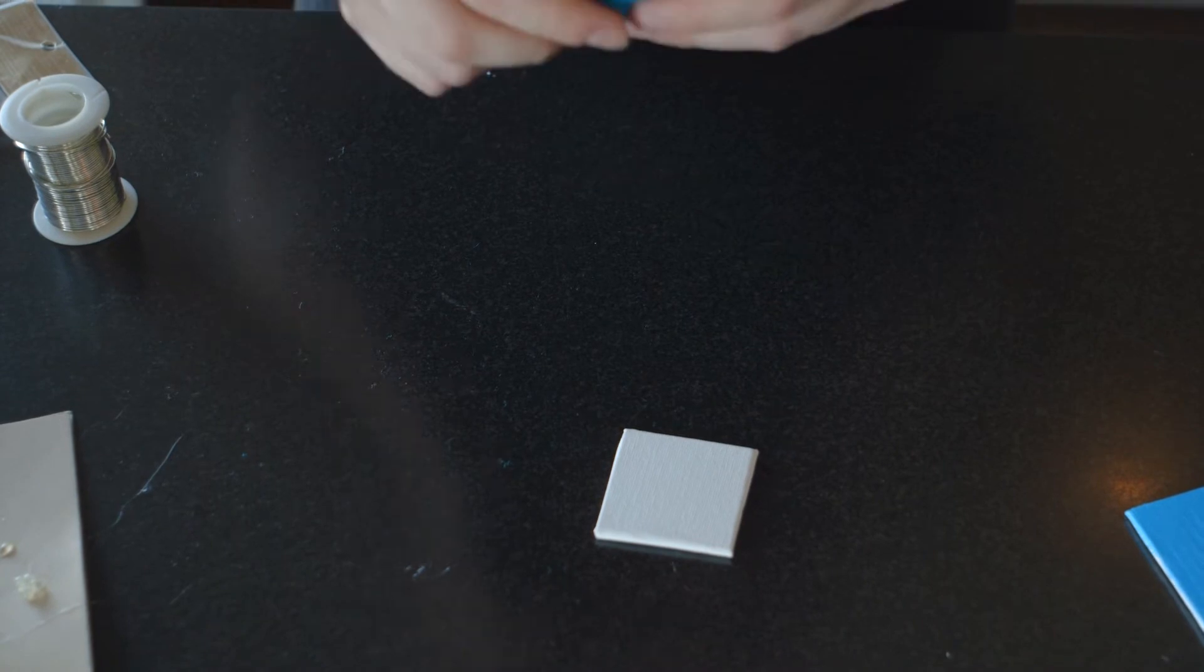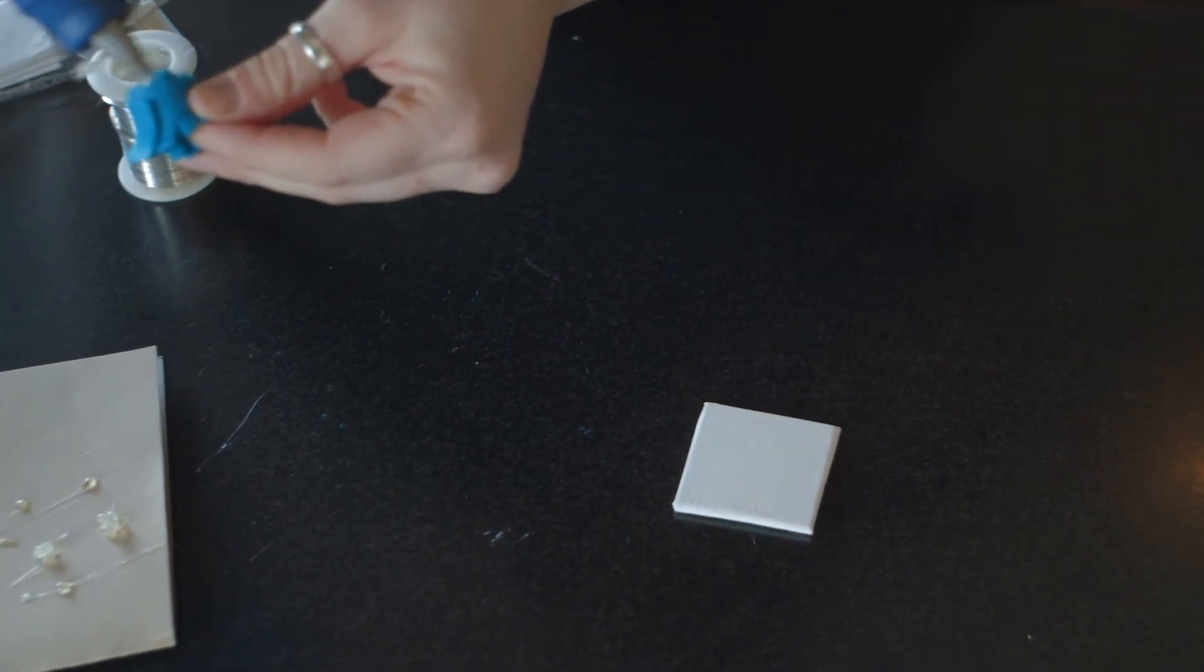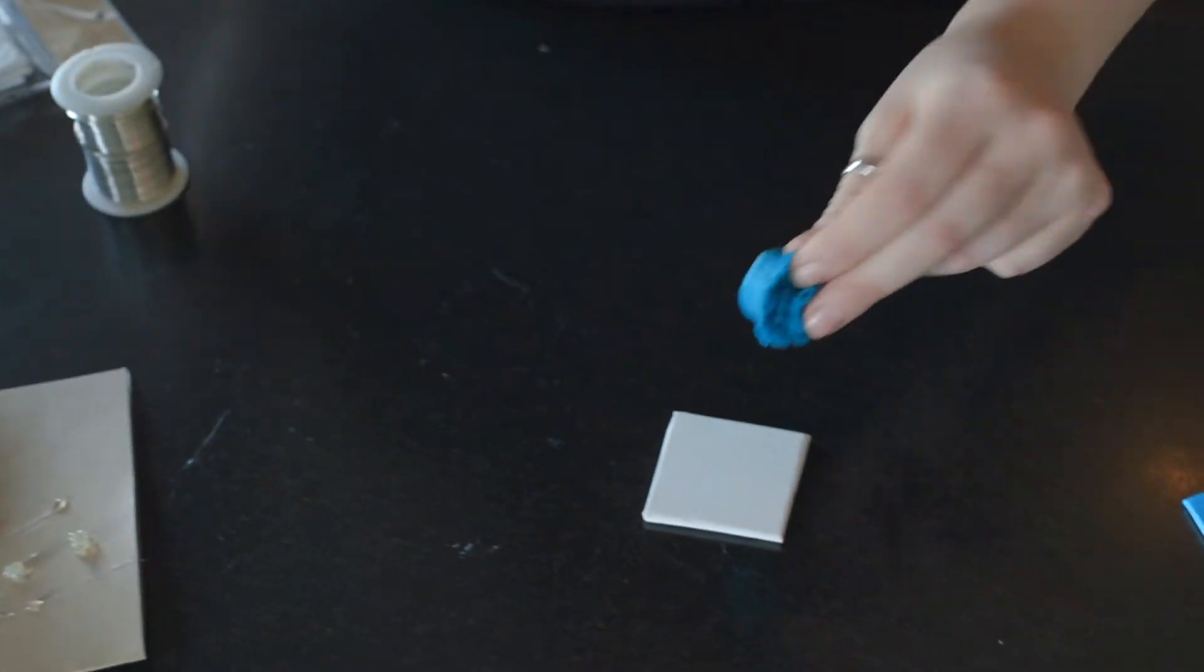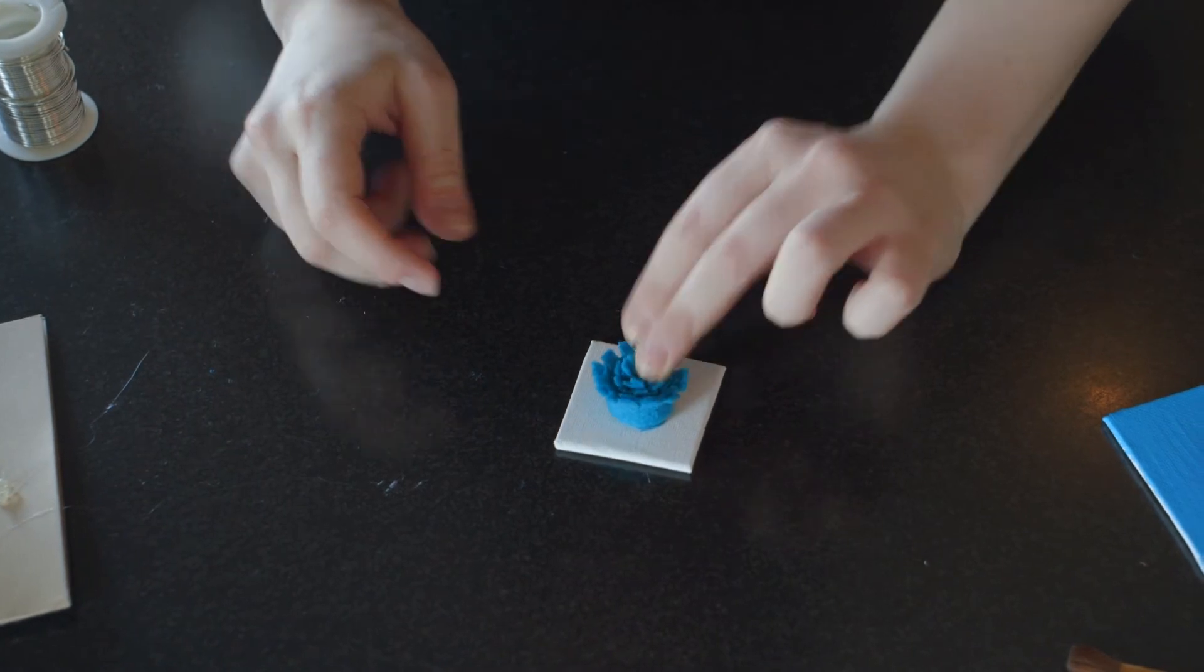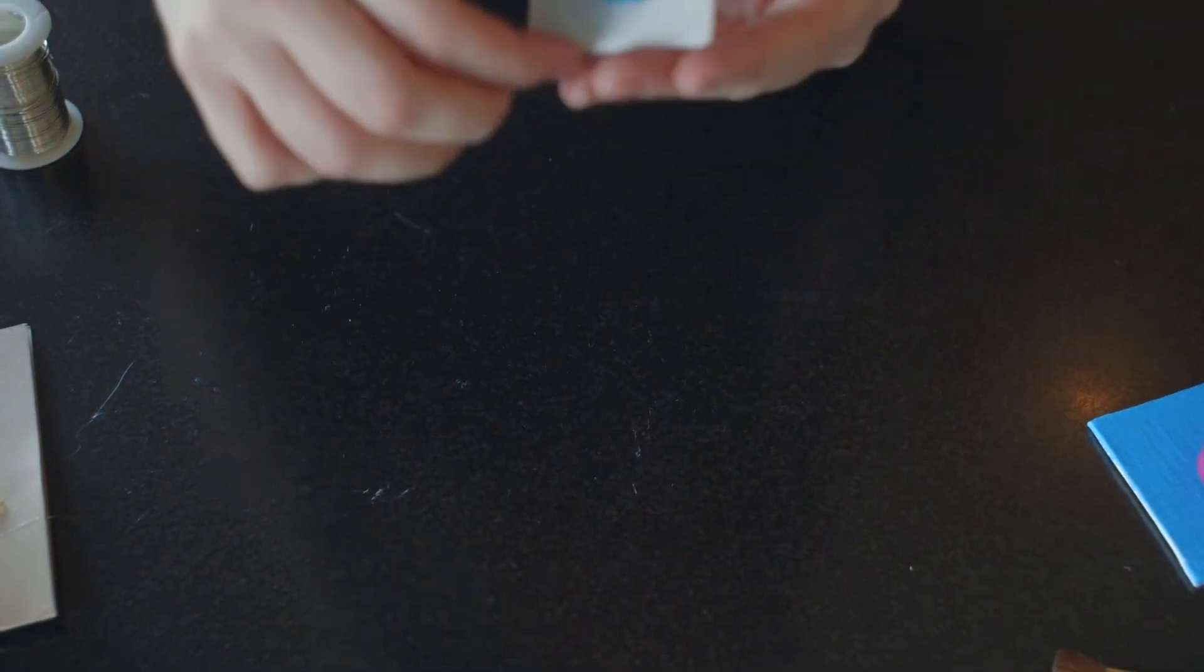And for the little canvas, I think you only need to do one strip. If you're doing a bigger canvas, you can add more. Same deal, put that hot glue on the back and just pop it in the center, just like that.